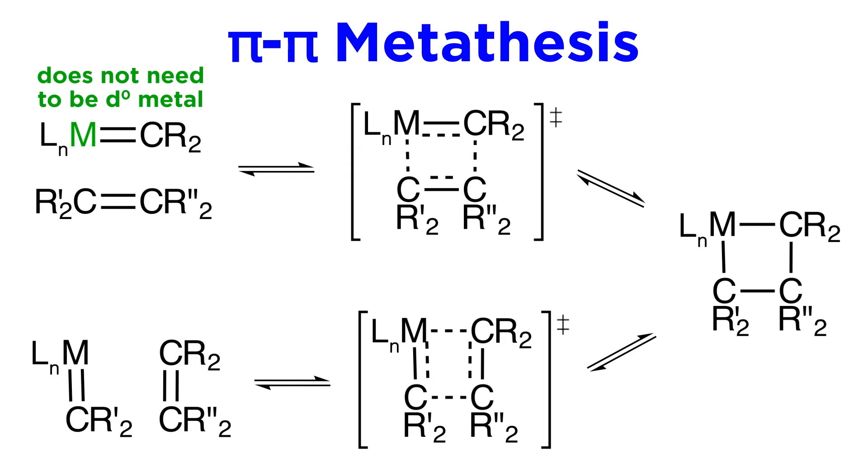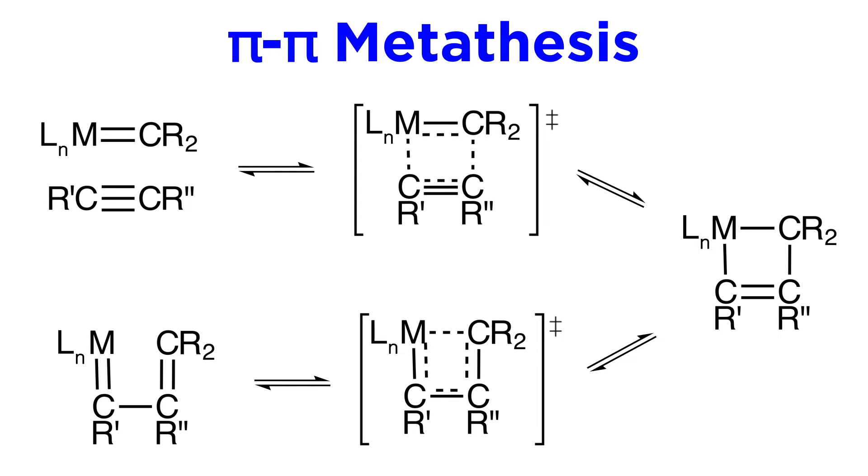With pi-pi metathesis, it is actually the case that the metal does not need to be D0, so this opens up additional possibilities. We should note that this type of metathesis is not limited to double bonds, triple bonds can also be involved, as is the case here, where a carbene reacts with an alkyne. We can see the relevant four-membered ring intermediate which then gives rise to the unimolecular product with the extended alkyl ligand.